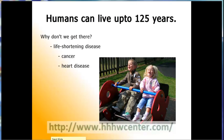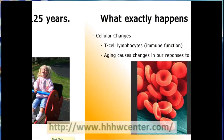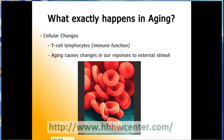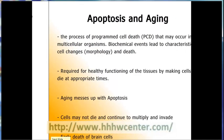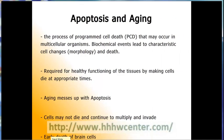Cellular changes associated with aging. Aging causes functional changes in cells. For example, the rate at which cells multiply tends to slow down as we age. Certain cells that are important for our immune system to work properly, called T-cell lymphocytes, also decrease with age. In addition, age causes changes in our responses to environmental stresses or exposures such as ultraviolet light, heat, not enough oxygen, poor nutrition, and toxins, among others.